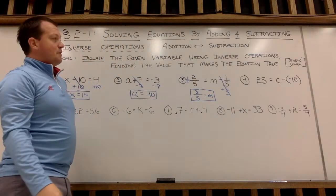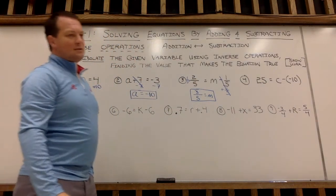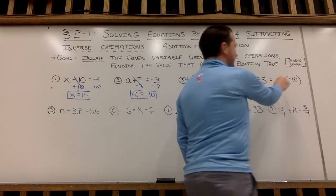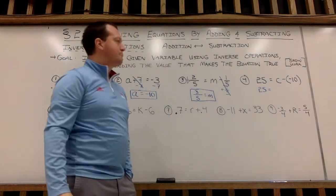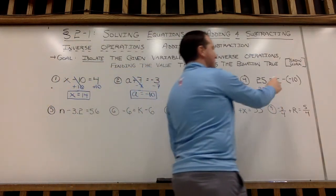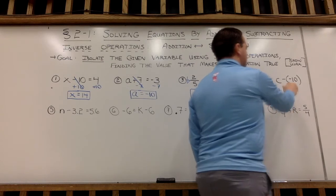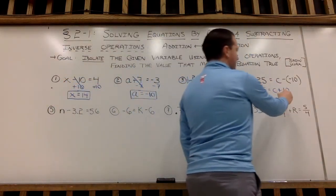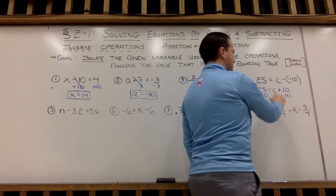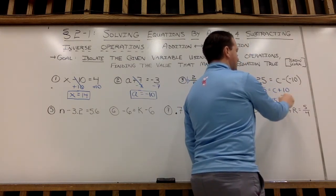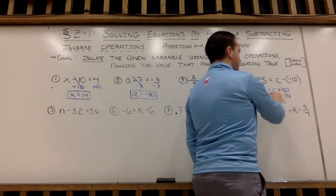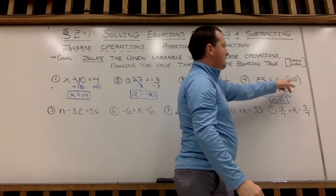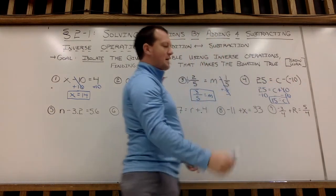Example 4: we have to do a little simplifying here first before we do inverse operations. So I'm going to have 25 equals c minus a negative 10. I'm going to combine minus a negative to c plus 10. So now to isolate c, I'm going to undo adding 10 with subtracting 10 from both sides. 15 will equal c. Check it: 15 minus a negative, 15 plus 10 is 25. Yahtzee.